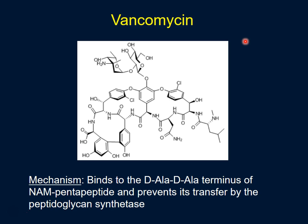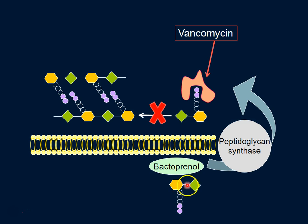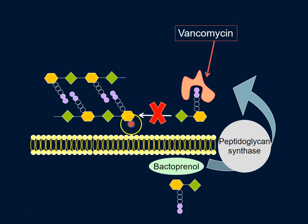The mechanism of vancomycin is very unique. It binds to the two D-alanine residues that are part of the pentapeptide attached to the NAM sugar, and by binding very tightly, prevents the transfer of sugars onto the growing cell wall. The cytoplasmic membrane is where the NAM unit with its five-amino-acid pentapeptide is assembled, and peptidoglycan synthase normally takes that disaccharide complex and attaches it to the growing cell wall outside, forming sugar-sugar bonds.